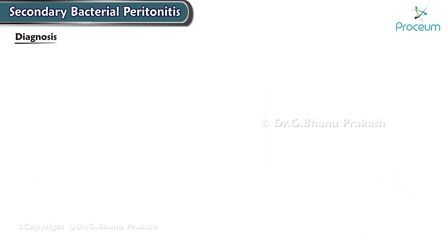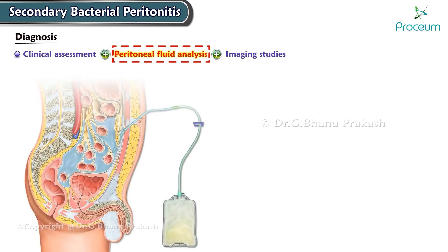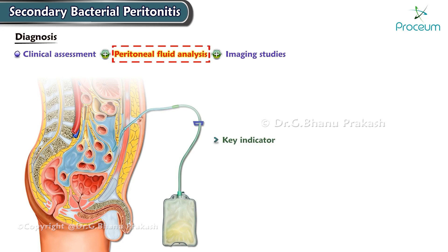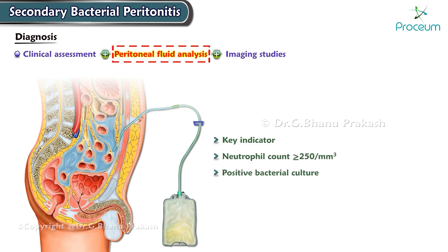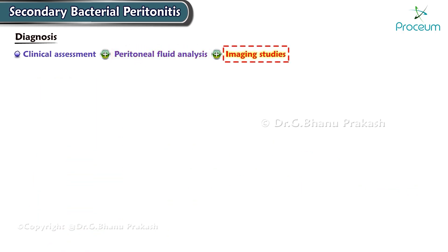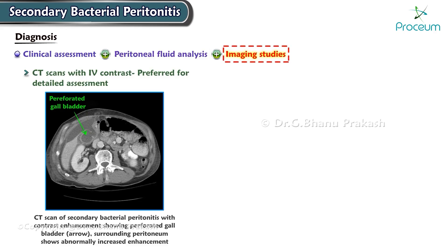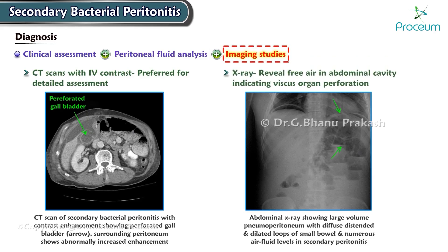Diagnosing secondary bacterial peritonitis involves a combination of clinical assessment, peritoneal fluid analysis, and imaging studies. Peritoneal fluid analysis is a key indicator that includes neutrophil count greater than or equal to 250 per cubic millimeter, positive bacterial culture, and specific chemistries such as protein, lactate dehydrogenase, and glucose levels. Imaging studies such as CT scans with intravenous contrast are preferred for detailed assessment. An X-ray may reveal free air in the abdominal cavity, which can indicate viscus organ perforation.